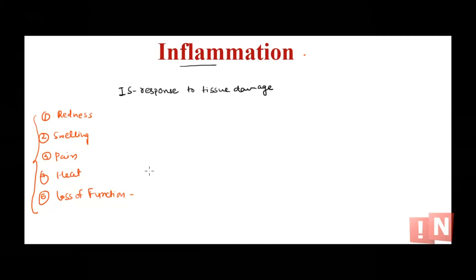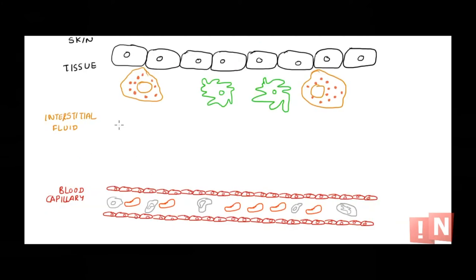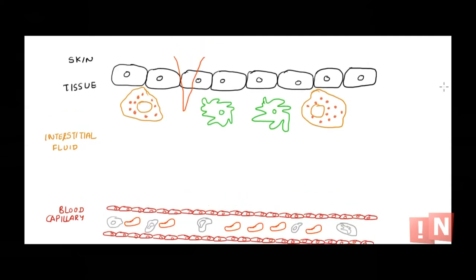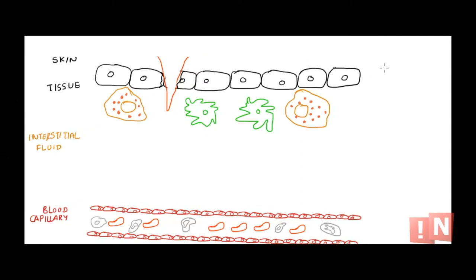Let's take a diagram and start with the process. Let's say you get pricked by a nail — not a good thing, but let's assume. What happens is we get tissue damage in that region, so cells of that particular region would be damaged. That's the first thing: tissue damage has occurred.